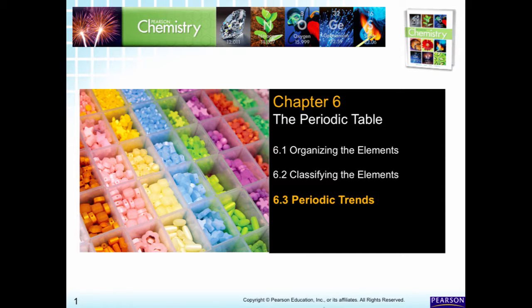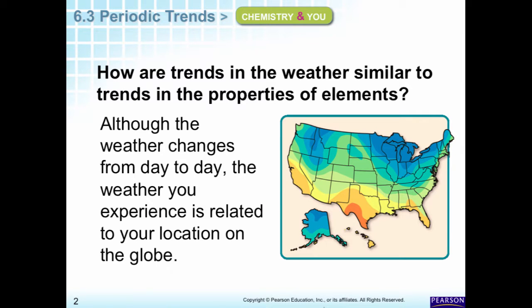Hi there. This is chapter 6.3, Periodic Trends. Welcome. We see a weather map here, and we can see the different patterns throughout the United States. There are trends where weather travels from the West Coast to the East Coast, or up from the Gulf to the Northeast. Weather can be plotted through computer models to show the trends of future weather. That is also true with the periodic table.